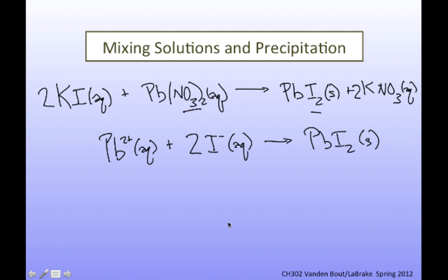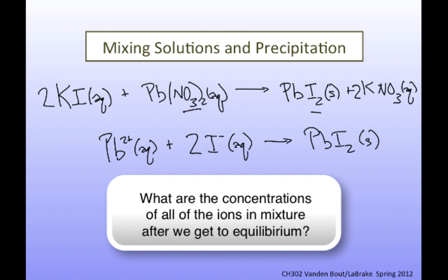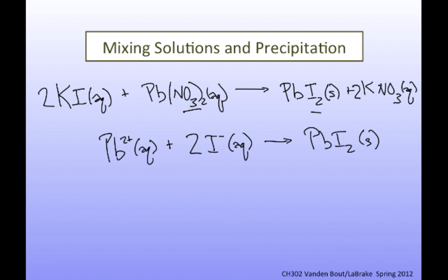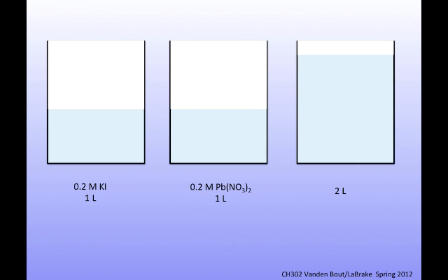This is our net ionic equation, and what we'll want to look at is what are the concentrations of lead and what are the concentrations of iodide. I'm going to imagine mixing one liter of a 0.2 molar KI solution with one liter of a 0.2 molar lead nitrate solution, giving a final solution of two liters.